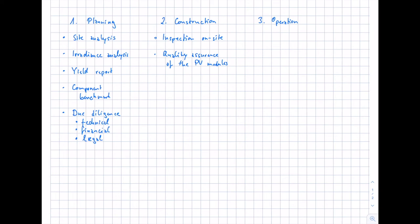After the construction is finished, there is the technical acceptance test. This means a final power plant test: has the PV system been constructed as planned? What about documentation? Do all the components work? Are there minor or major issues? All these points are summarized in an independent test report. After reconnection, the operator can take over and be responsible for the PV system.